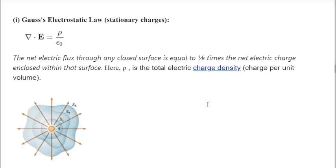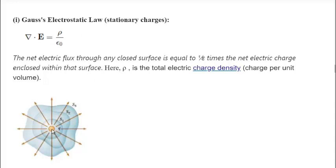Here you have a picture of what this law is talking about — just one charge. The charge density would be 1 in this case, but you could have many charges enclosed within a surface. Basically, this is saying the net electric flux through any closed surface — whether it's surface S1, S2, or S3 — doesn't matter which surface you enclose: the net flux is directly proportional to the number of charges within that surface.